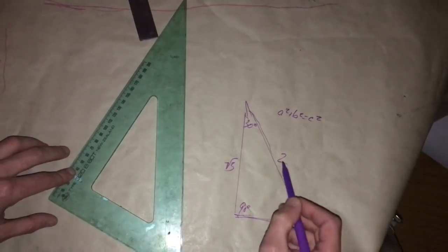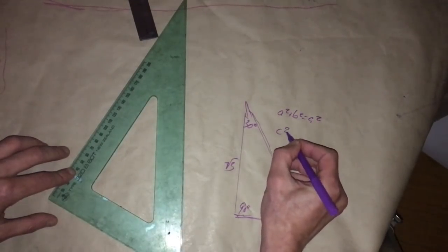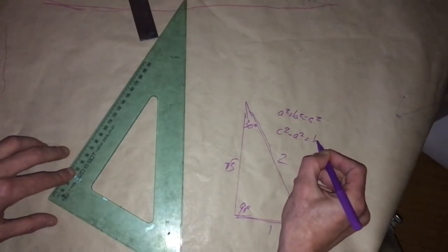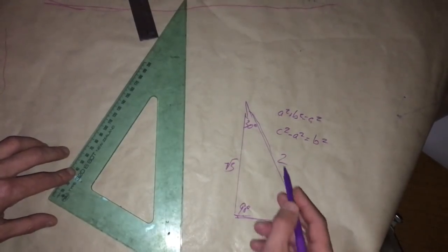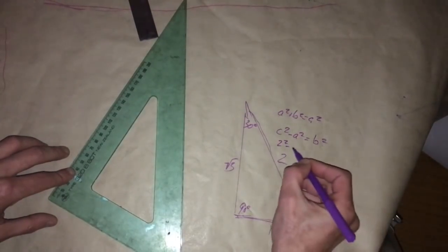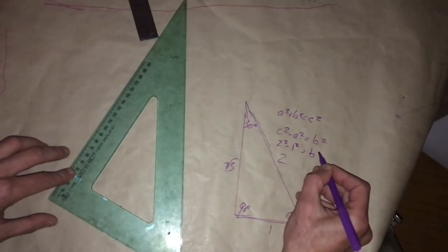We know what A and C are, so we could say C² - A² = B². We can insert that. So what is C? So 2² - 1² equals B².